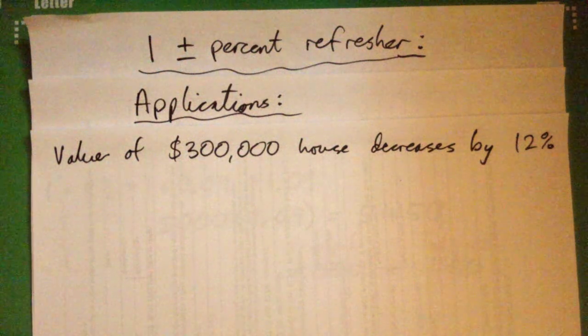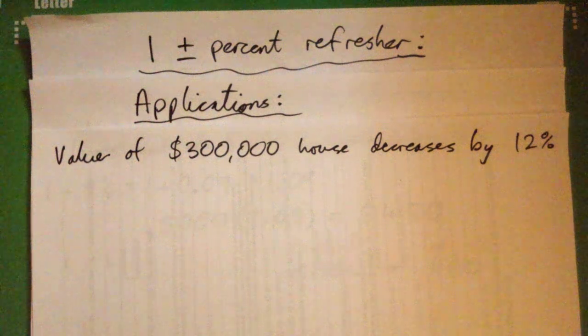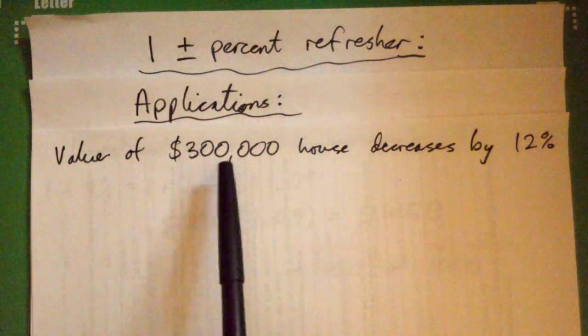So we'll do a value of $300,000 house decreases by 12%. So there's two ways. There's get 12% off that and then subtract.